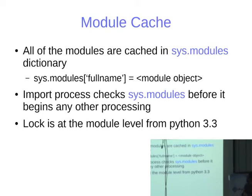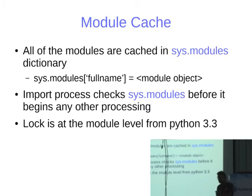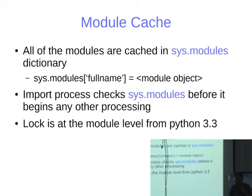All modules are cached in sys.modules, which is just a dictionary. The key is the fully qualified name — for example, package.subpackage.module — and the module object is the value. There is only one object type in Python called a module. Packages are also a type of module — there's only a subtle difference, but all of them are module objects.